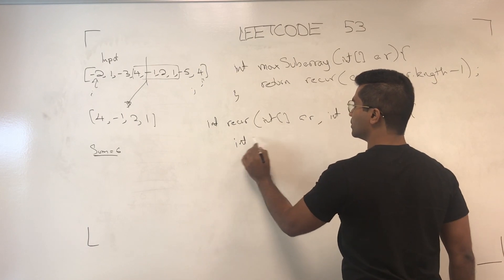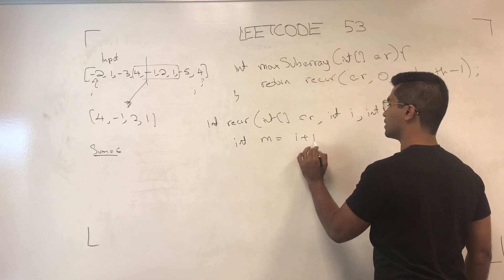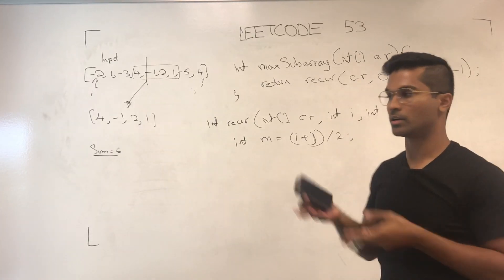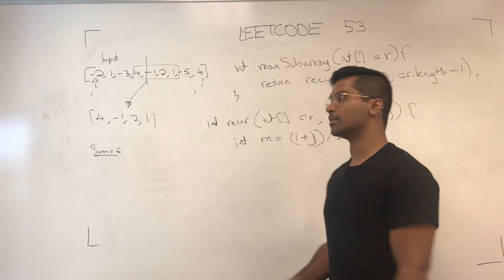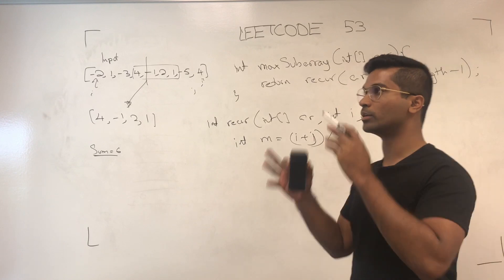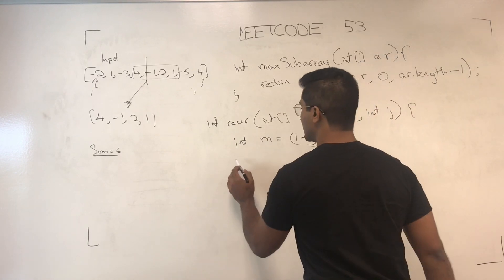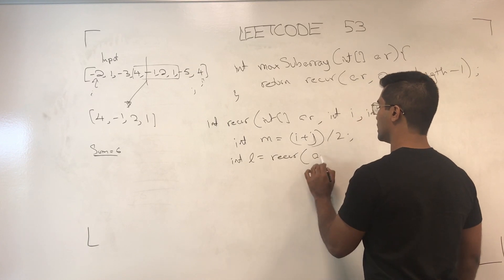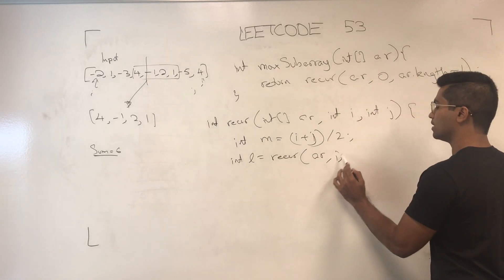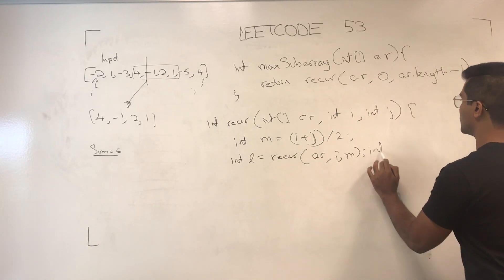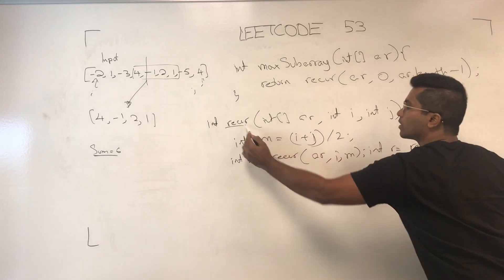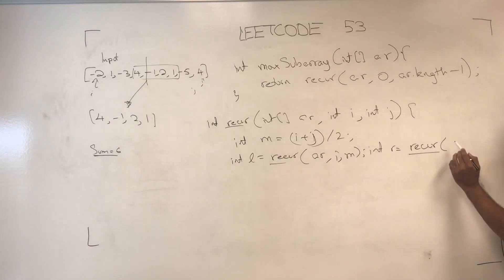Now the first thing we do is get our midpoint and recursively call the left side and right side, and then we'll see if including the middle is beneficial. So int l is going to be recur ar i and m, int r is going to be recur, so this is the recursive divide and conquer going on.